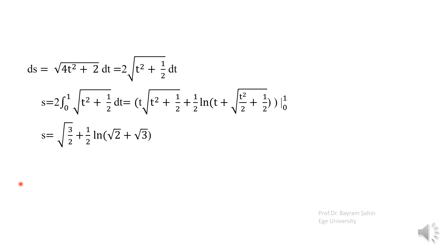So ds = √(4t² + 2) dt = 2√(t² + 1/2) dt. Integrating both sides, s = 2 ∫₀¹ √(t² + 1/2) dt. Using the substitution method to evaluate this integral and substituting the endpoints, we obtain a numerical value for s — this is the length of the curve on the surface.